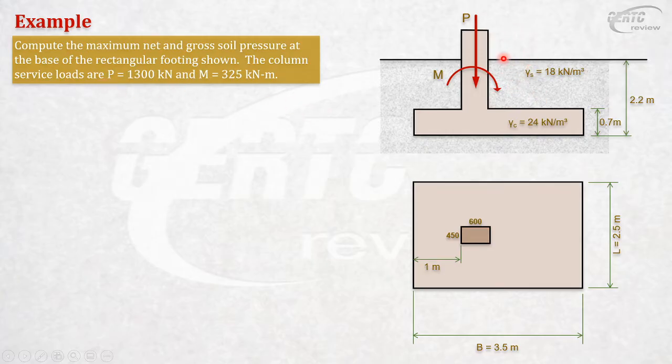Our P is 1300 kN and moment is 325 kN-m. How do we solve this? What's the first step?